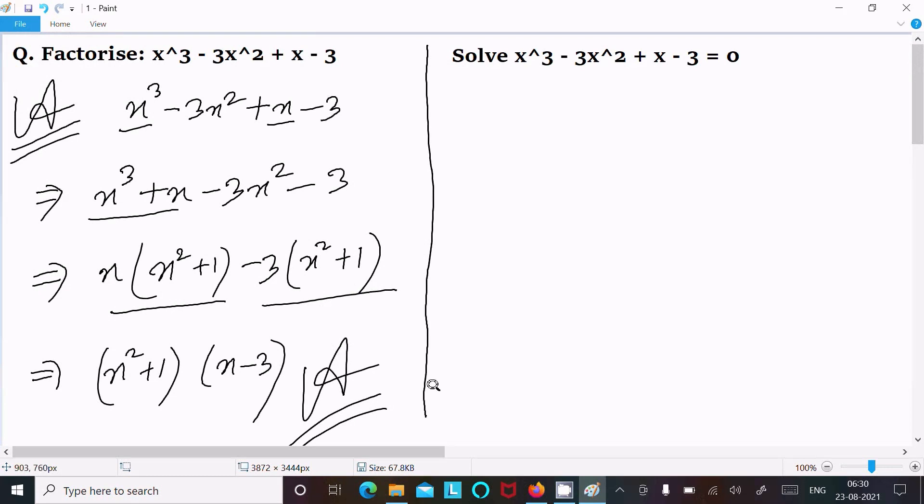Now the next is going to find the value of x. So writing here x³ - 3x² + x - 3 = 0. Now put x³ and x in one side. Then after x³ + x - 3x² - 3 = 0.